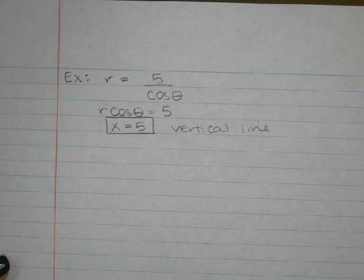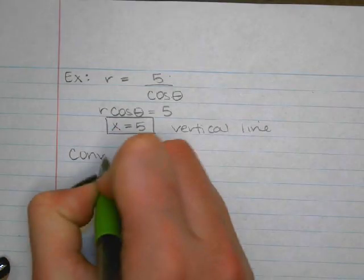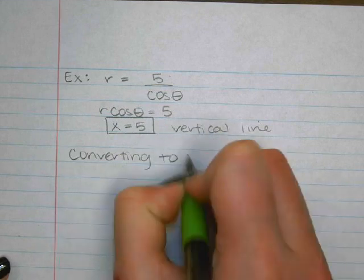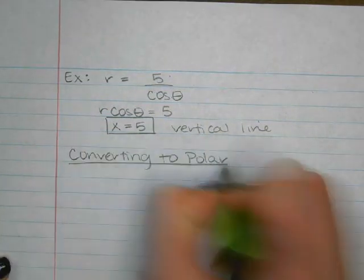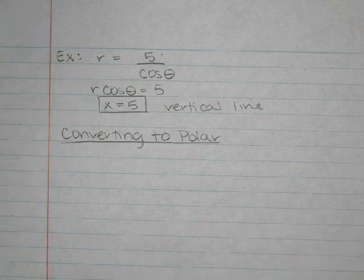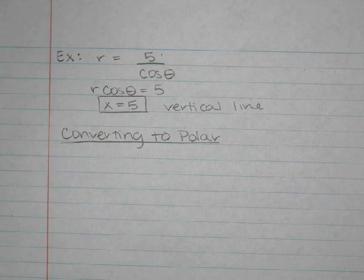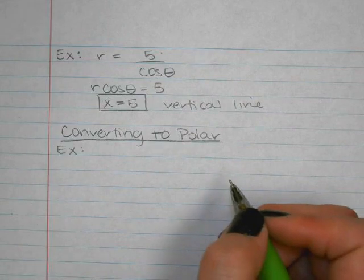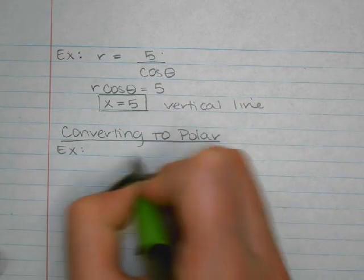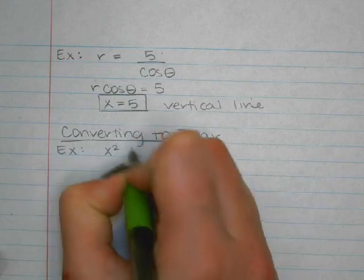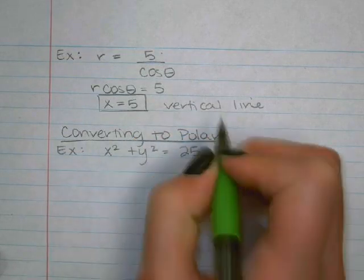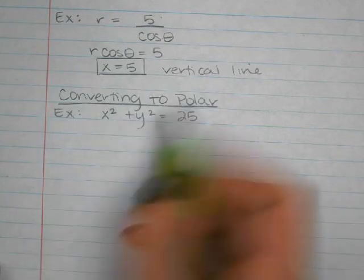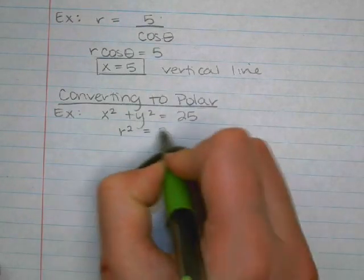Now let's talk about converting to polar form. Most equations, unless they are straight lines through the origin, will be written as R = something when recognizable in polar form. So that's typically our goal when converting — to get it as R = something. For example: x² + y² = 25.